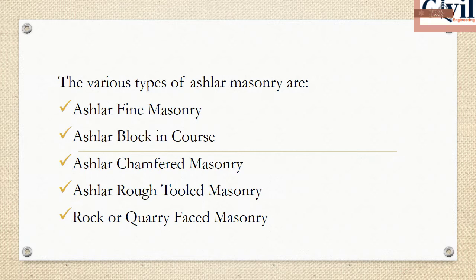Ashlar masonry is categorized into: Ashlar Fine masonry, Ashlar Blocking Course, Ashlar Chamfered masonry, Ashlar Rough Tooled masonry, and Rock-faced masonry.